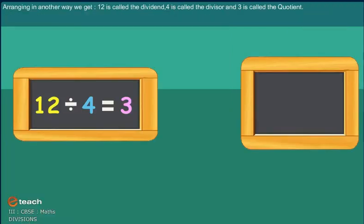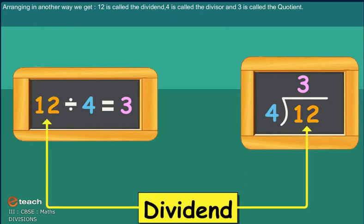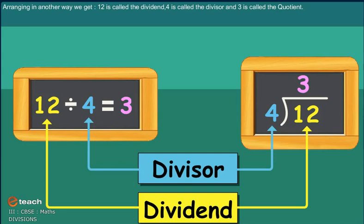Arranged in another way, we get: 12 is called dividend, 4 is called divisor, and 3 is called quotient.